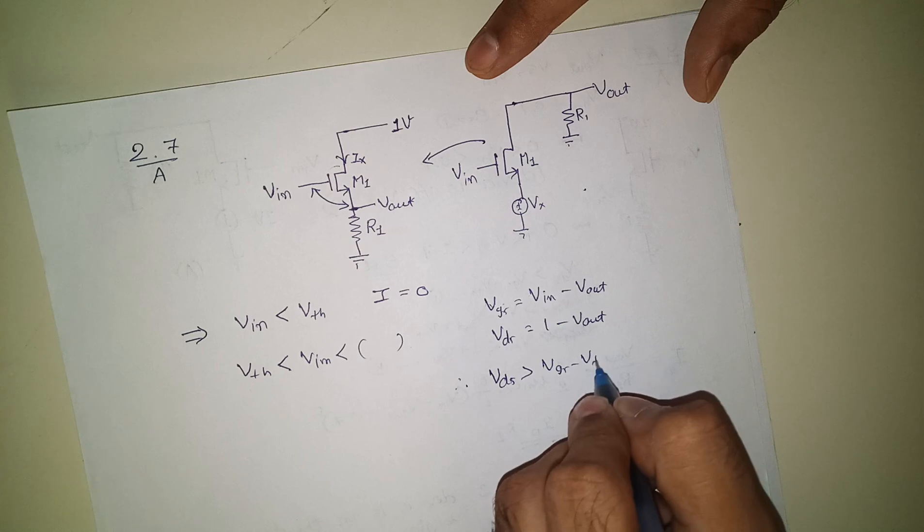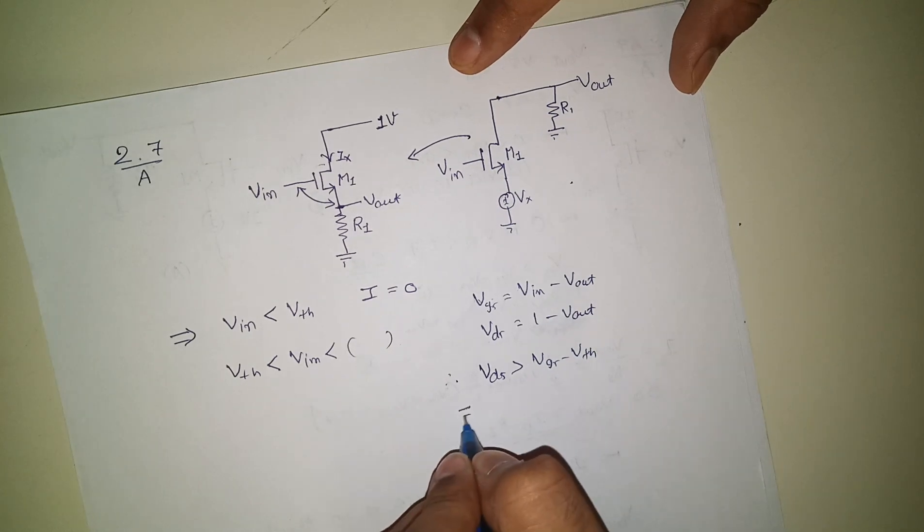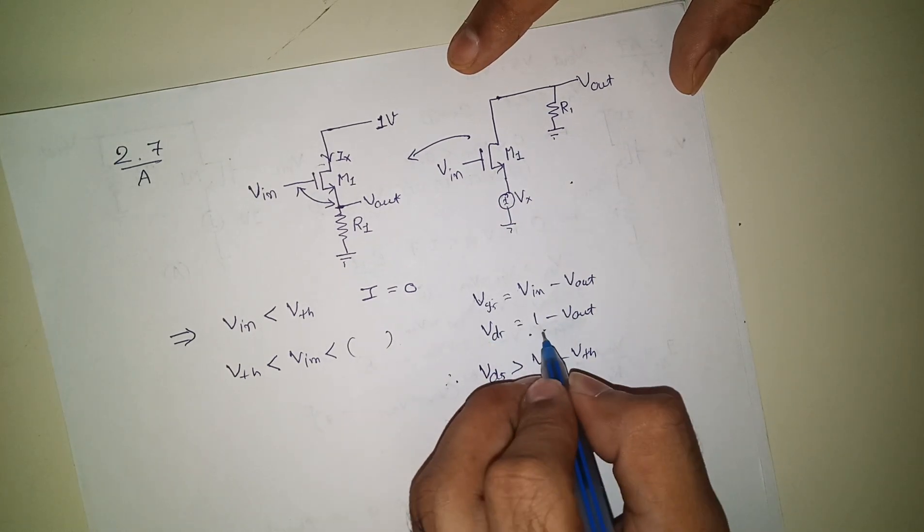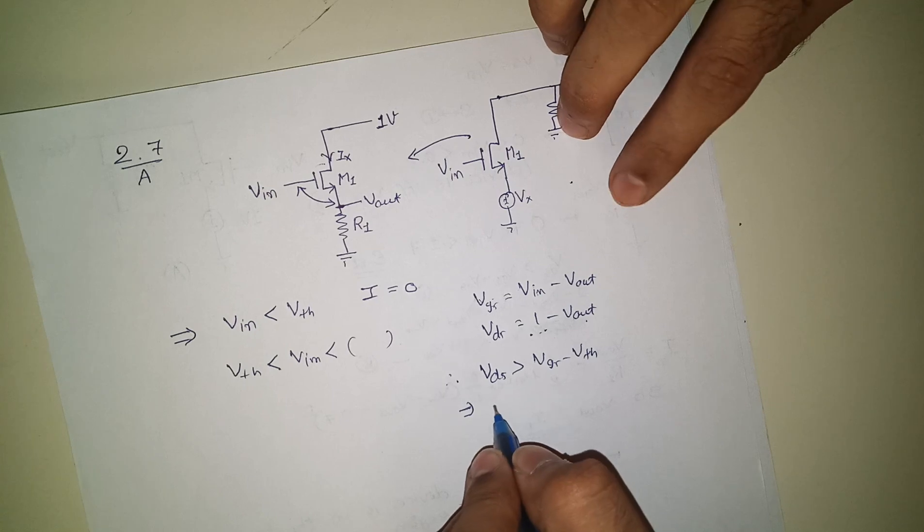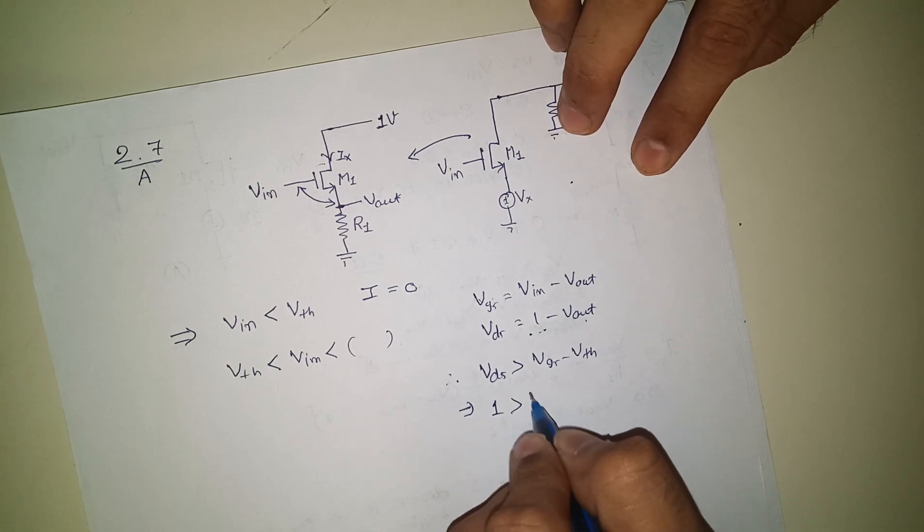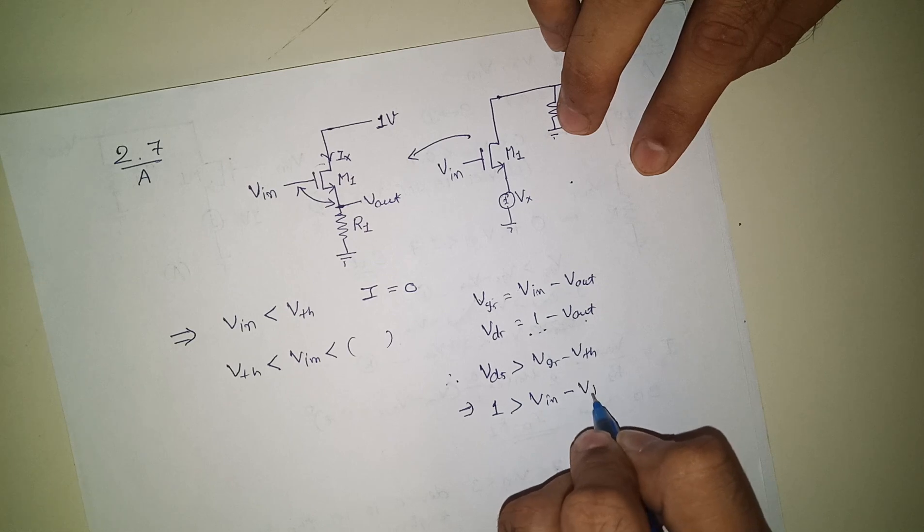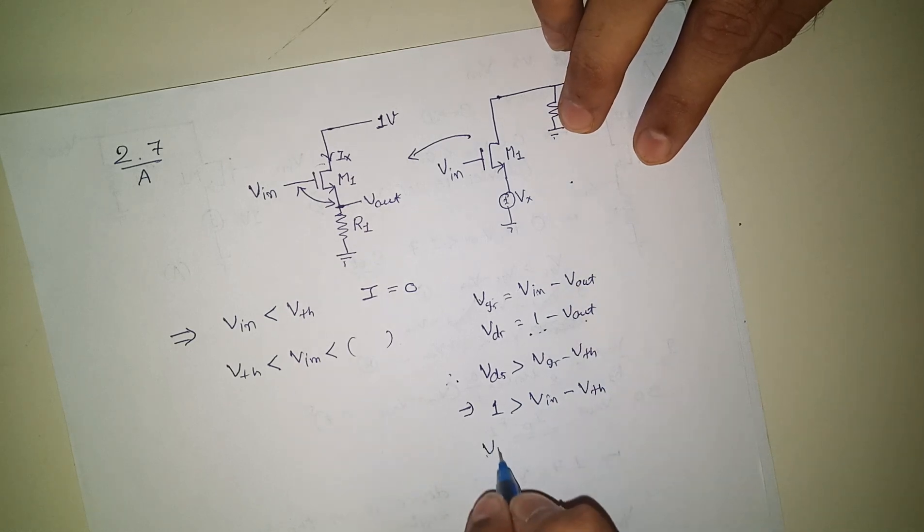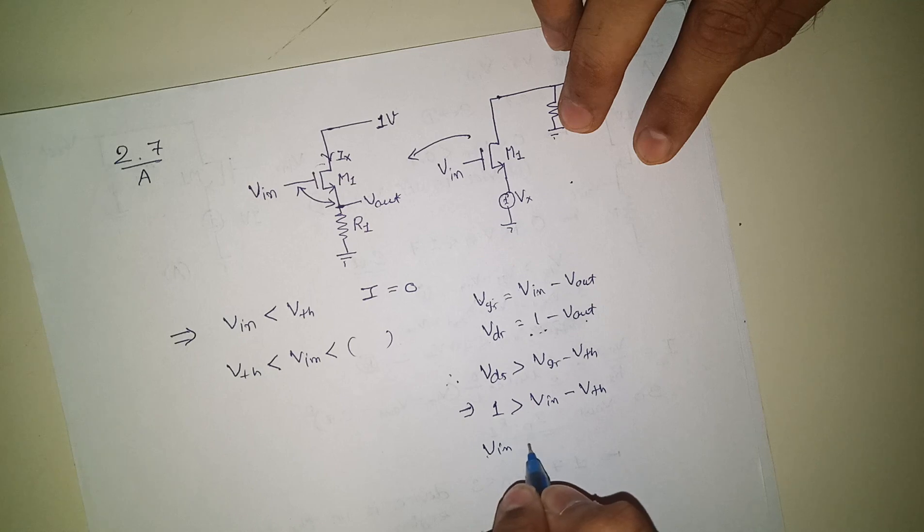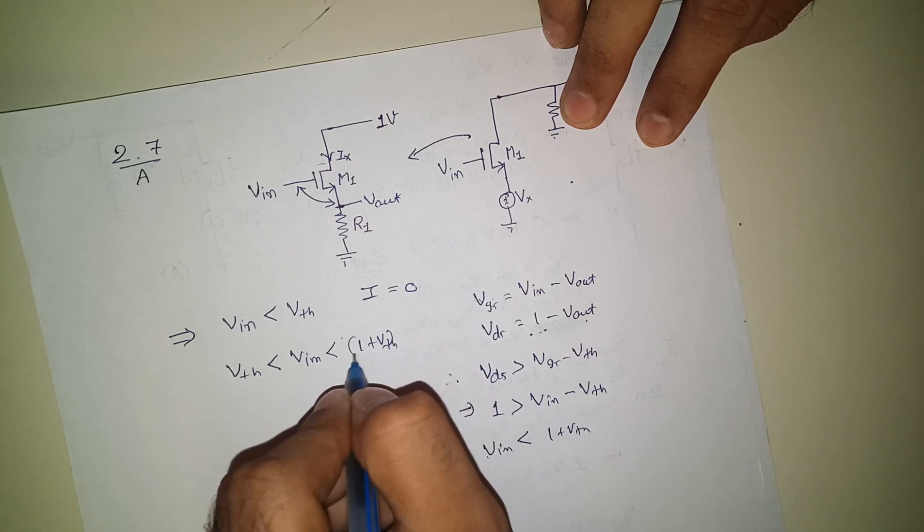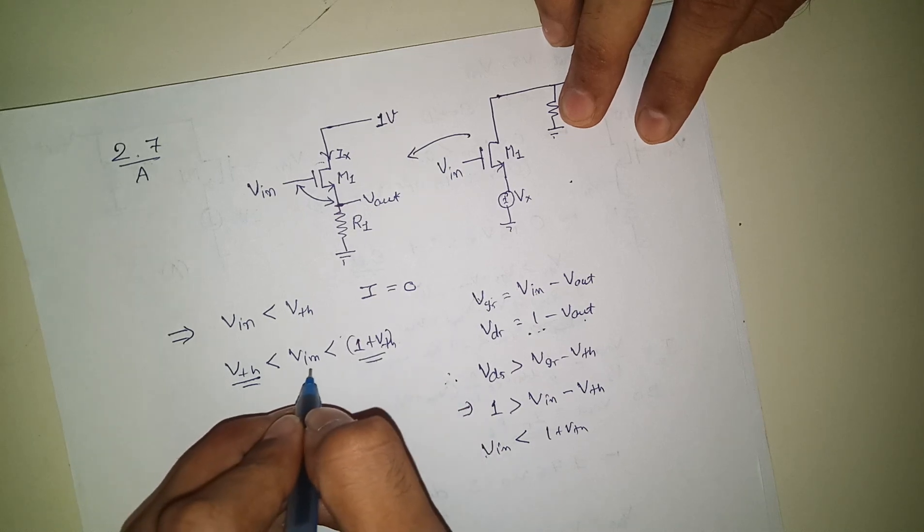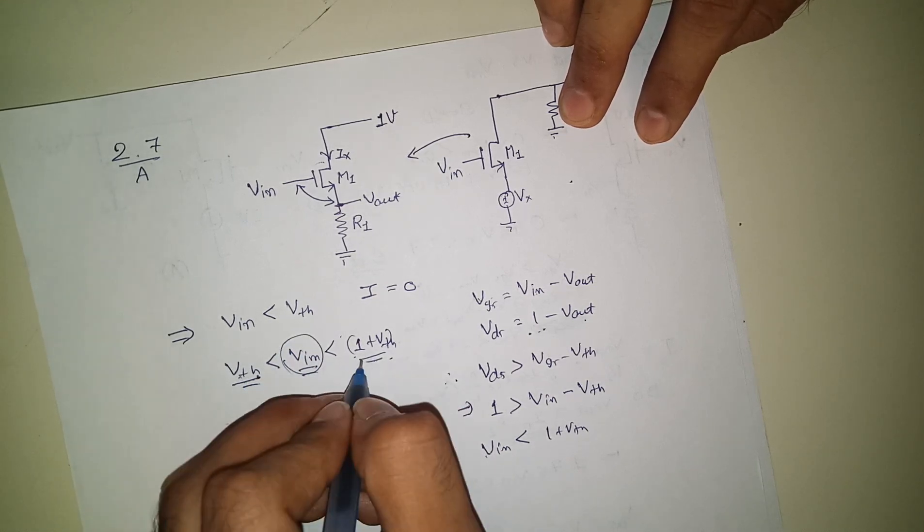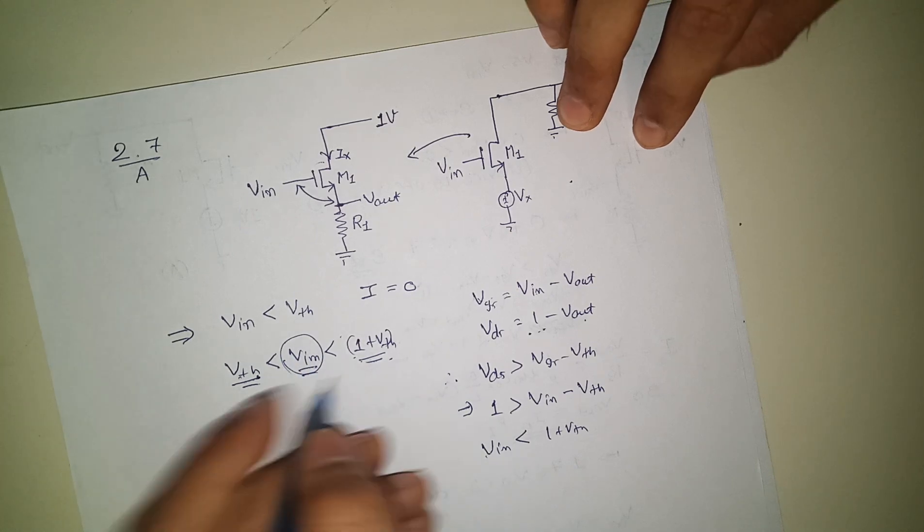V_out will cancel, this will come... so V_in is 1 plus V_th. So this value will be 1 plus V_th. So up to this point, 1 plus V_th, I mean from V_th to 1 plus V_th, this range. In this range, if V_in is there, then your current will be I_saturation.